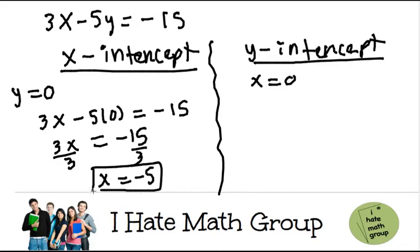This is how you write it down. Remember, x comes before y, so negative 5, 0.